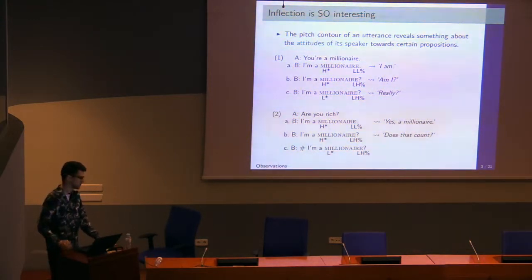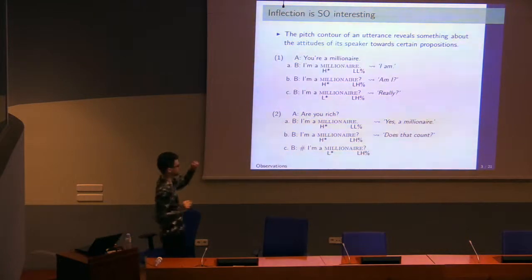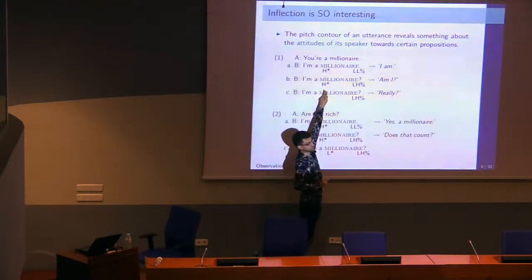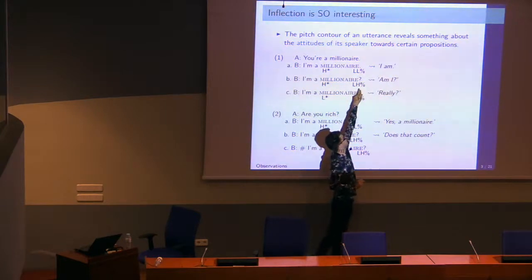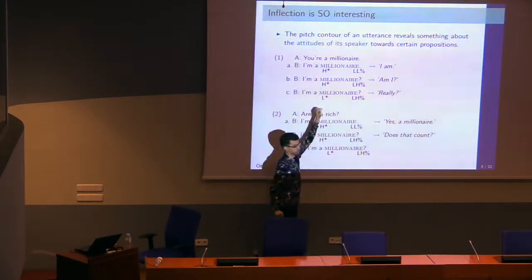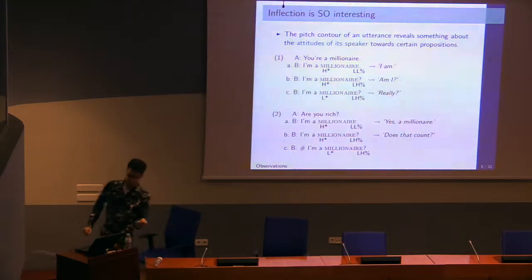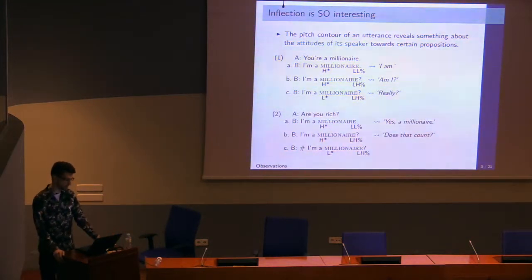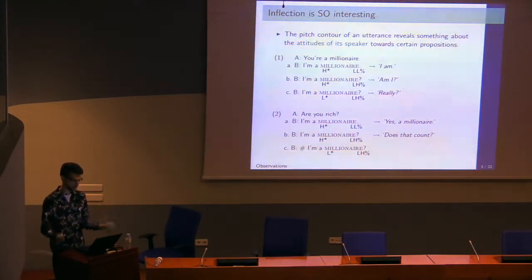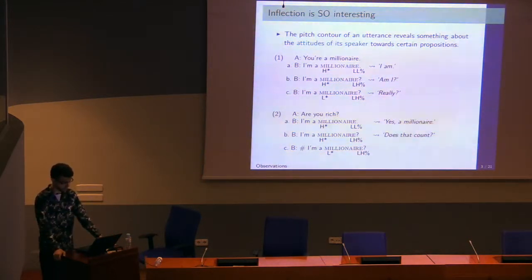In one A, B is saying I'm a millionaire and thereby agreeing with the statement. But in B, he's raising his voice at the end. In general, we mark raising of the voice with an H and lowering with an L. In one C, I'm a millionaire, he goes down, expressing doubt. He's confused about being a millionaire.